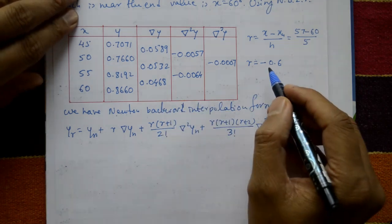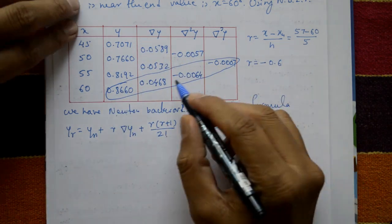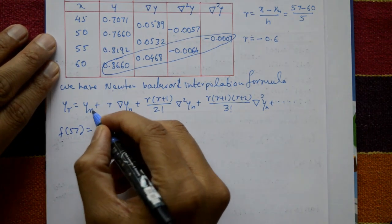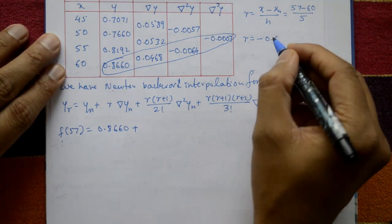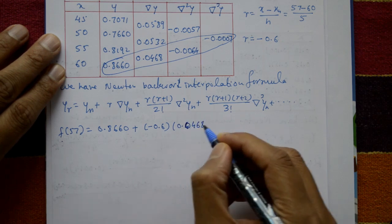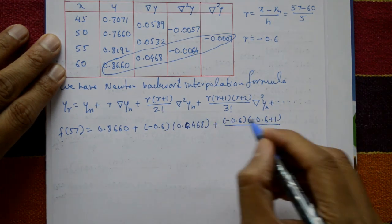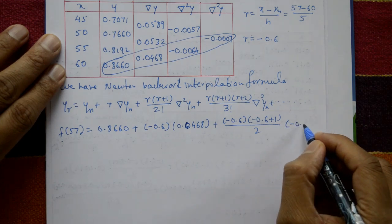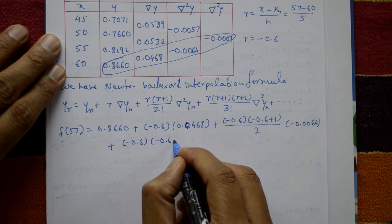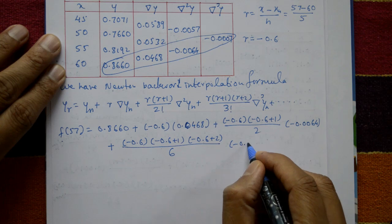Using the backward differences — the last values of each column — we substitute into the formula. F(57) = 0.8660 + (−0.6)(0.0468) + (−0.6)(−0.6+1)/2 · (−0.0064) + (−0.6)(−0.6+1)(−0.6+2)/6 · (−0.0007).